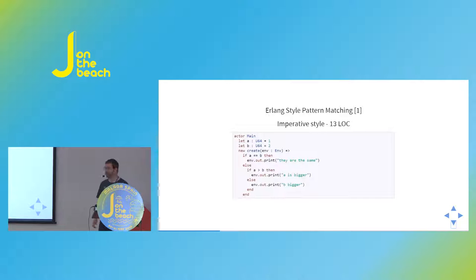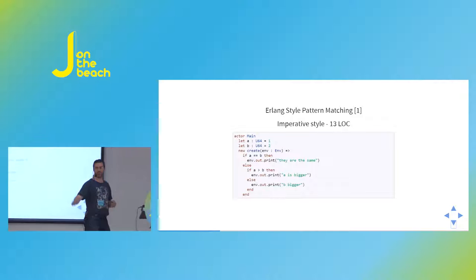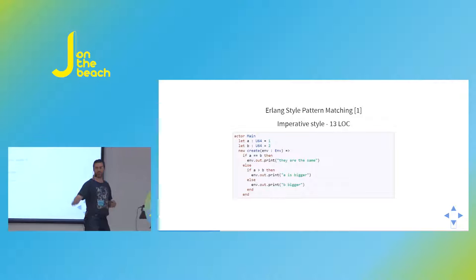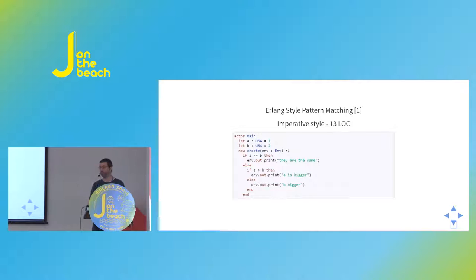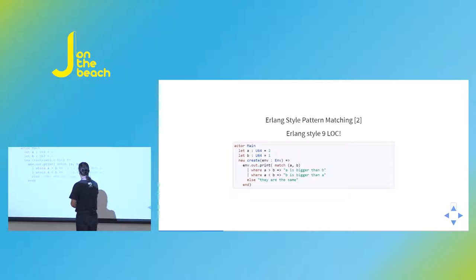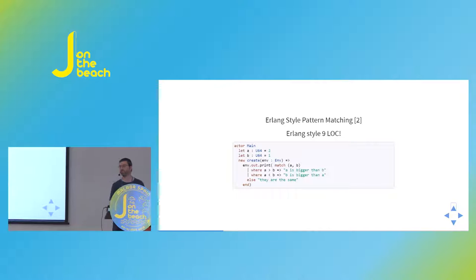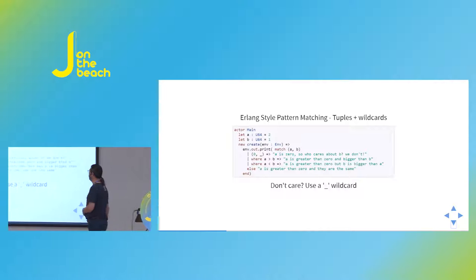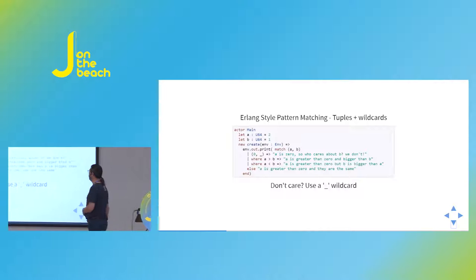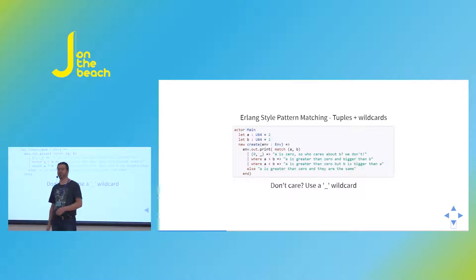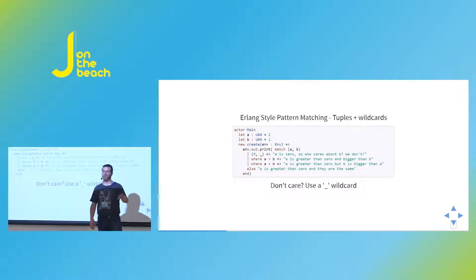Pony has Erlang-style pattern matching. We have a match expression that allows matching on various arguments. We also have tuples — when you see parentheses separated by commas, that's a tuple in Pony. This gives a much more concise way to process complex expressions. You can also use wildcards, as in Erlang — if you get an internal structure you don't care about, you swap it out with a wildcard.